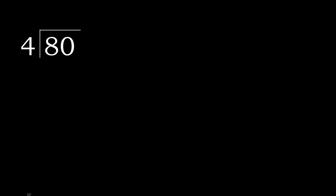80 divided by 4. 8 is not less, therefore work with 8. 4 multiplied by which number is nearest to 8 but not greater? 4 multiplied by 3 is 12 — it's greater. 4 multiplied by 2 is 8 — it's not greater.